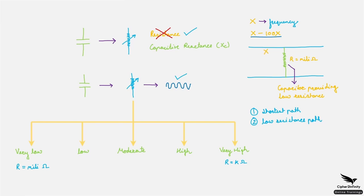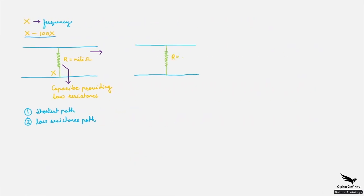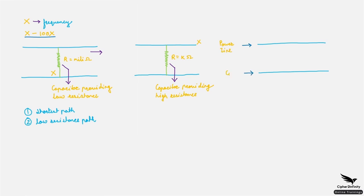The reason is that a signal always chooses the shortest path and the lowest resistance path to reach the ground. As a result, signals with such frequencies will be bypassed by the capacitor towards ground and will not travel towards the circuit. This is how the capacitor filters out signals with a specific frequency or range of frequencies. In the same way, for some frequencies the capacitor provides high resistance, so those frequencies will not be bypassed and they will travel towards the circuit. So always remember: whenever you have to remove noise from a signal or power line, check what the frequency is, and select a capacitor that provides a low resistance path to those frequencies.